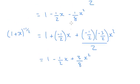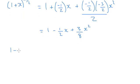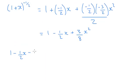So the next job is to then multiply these two results together. So we've got 1 minus a half x and minus an eighth x squared times by 1 minus a half x plus 3 eighths x squared.